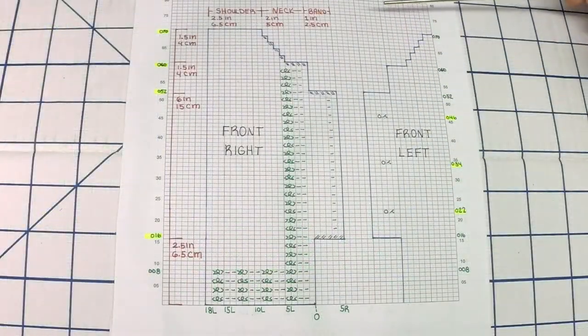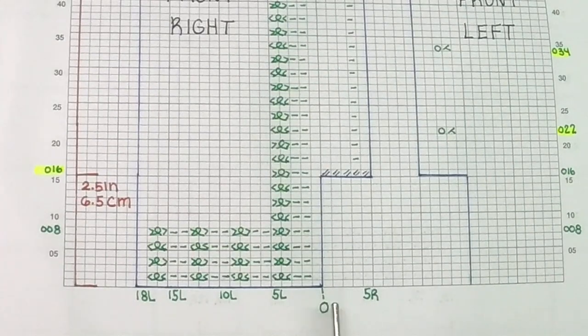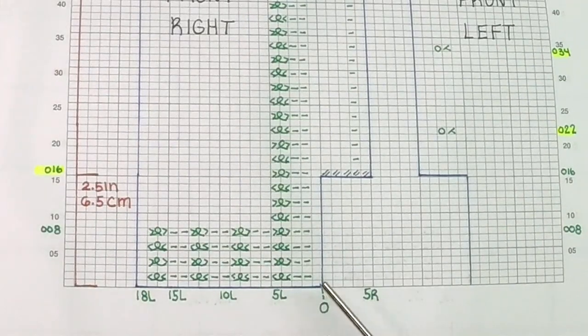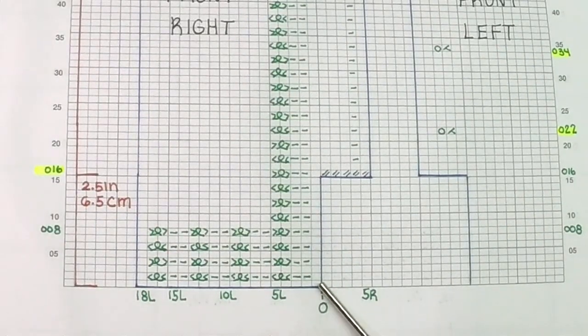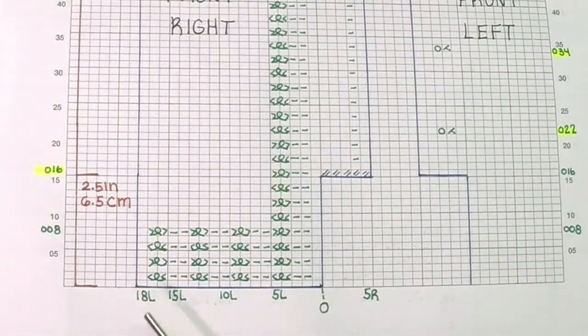This is the schematic for the front of the garment. This is the center of the needle bed and you're going to cast on 18 stitches to the left. Needle one and needle 18 are the edge stitch so they remain untouched.